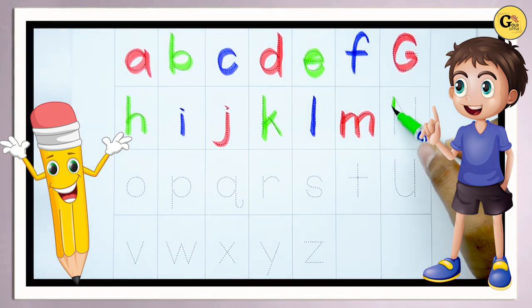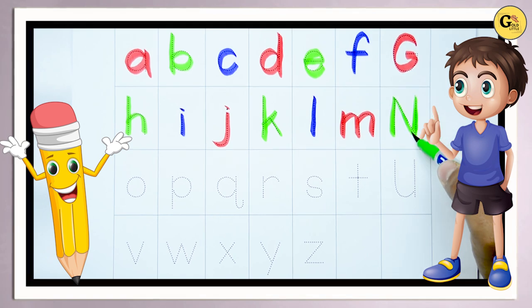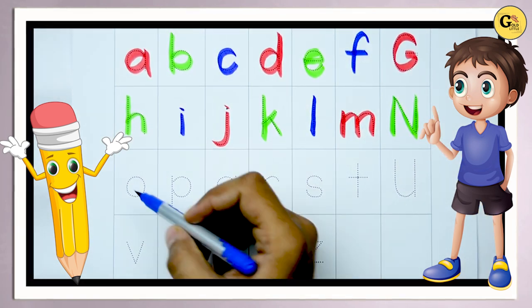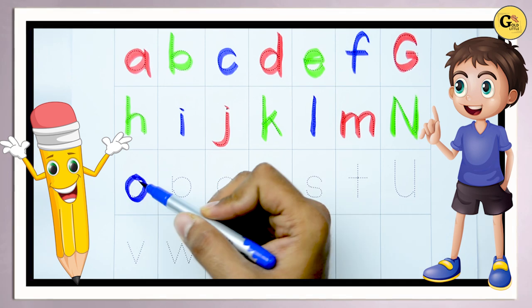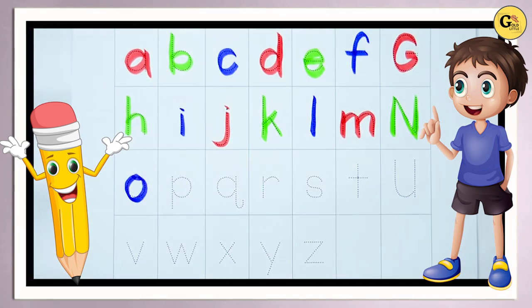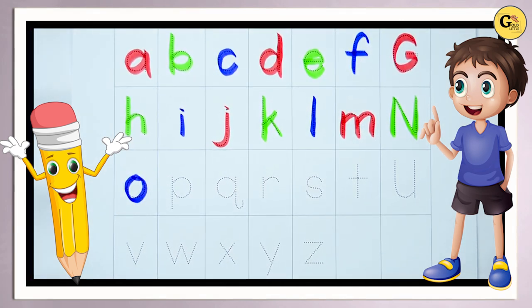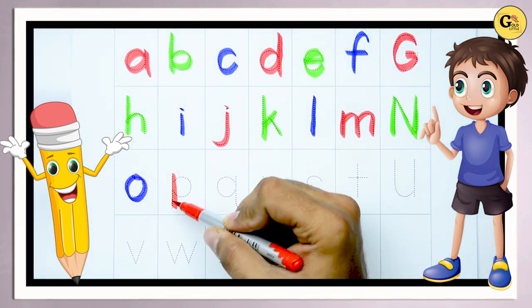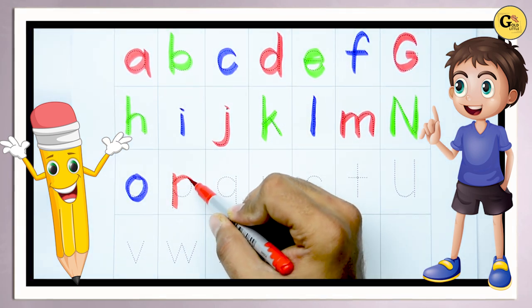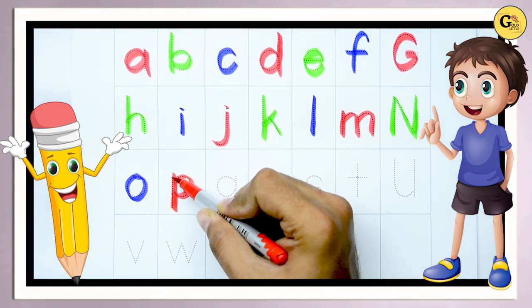N, N for nest. O, O for octopus. Yes, small o. P, small p. P for parrot.